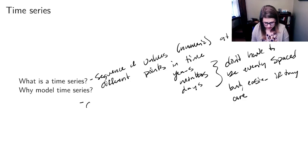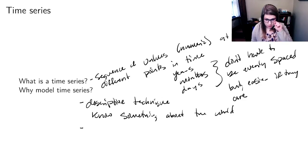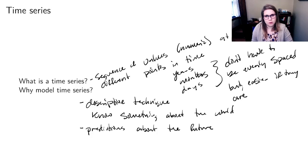There are basically two reasons. One is as a descriptive technique to know something about the world — we've used models this way before with linear regression or logistic regression. But we often also want them for an inferential task, and in this case we want to make predictions about the future, since this is data that has to do with time.